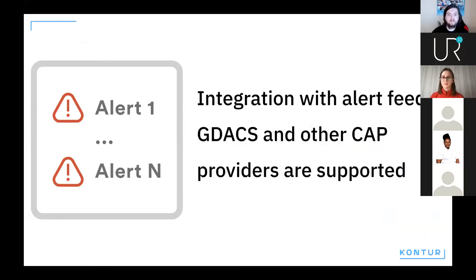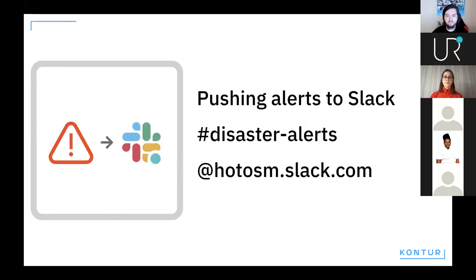We're pulling data from reputable open upstream institutions such as the Global Disaster Alert and Coordination System. We've also recently replaced the backend of Disaster Ninja with our commercial product, Contour Event Feed, so HOT is really getting a similar level of attention as our commercial customers do. We have also built a notification engine — follow the disaster alert channel on HOT Slack to get a sense of how many disasters are going on daily.